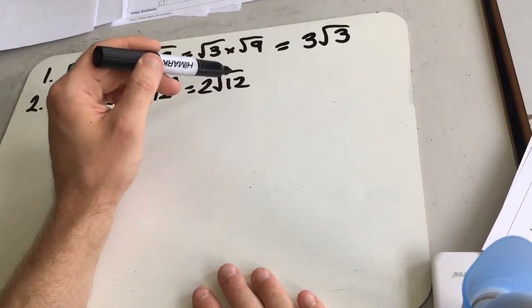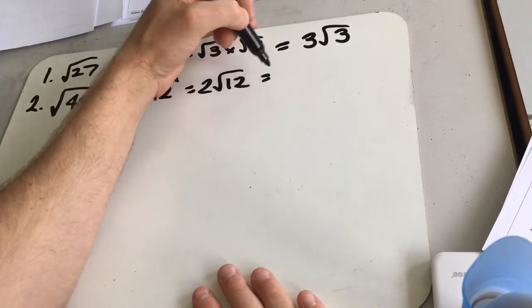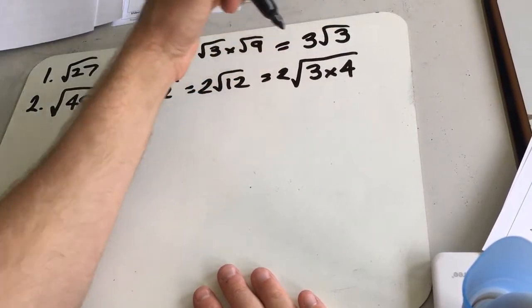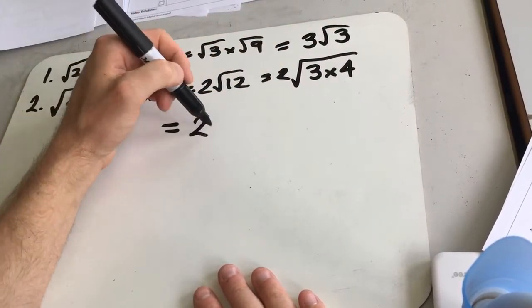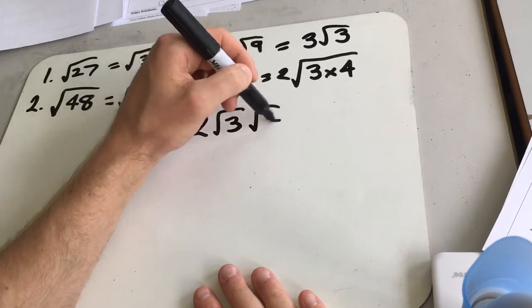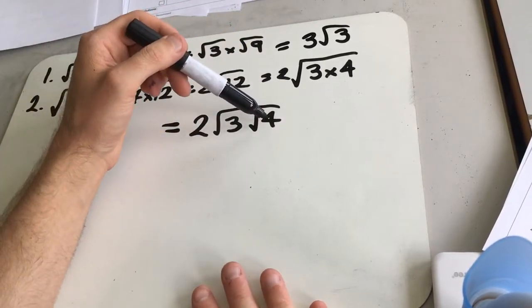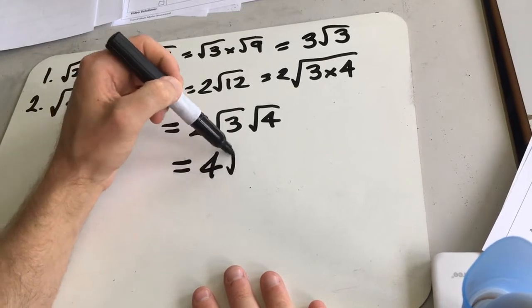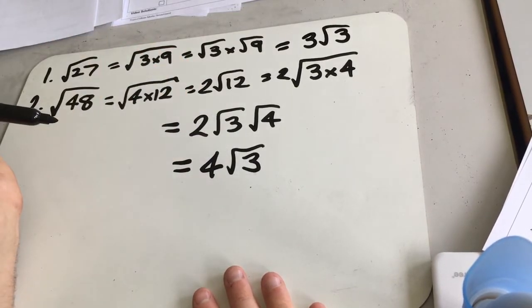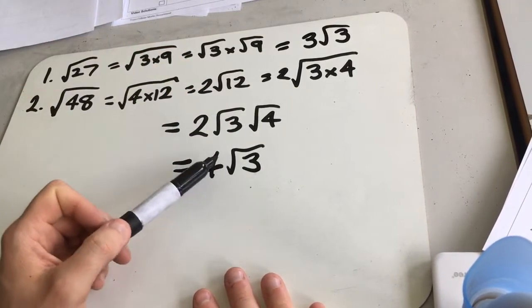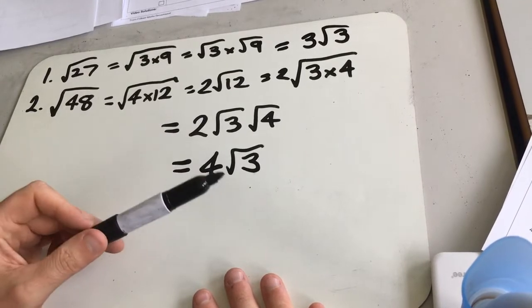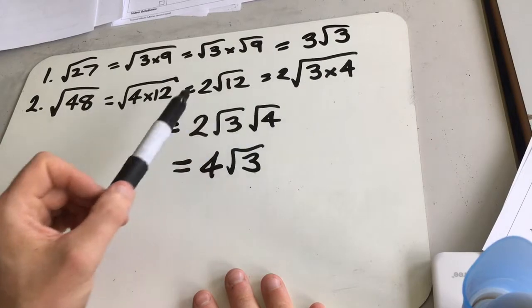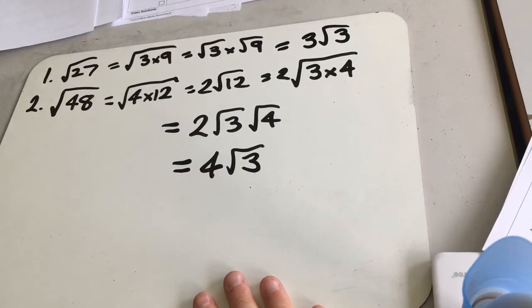So 12 I can then further split up into 3 and 4. So we can say it's 2 root 3 times 4, which is the same as 2 root 3 times root 4. We know root 4 again is 2, 2 times 2 is 4, so we end up with 4 root 3 for this one. If you started off and said, well, 48 is 3 times 16, that's a quicker way of doing this one. But feel free to break it up in stages if you feel like you need to.